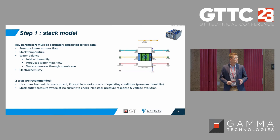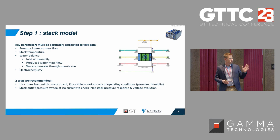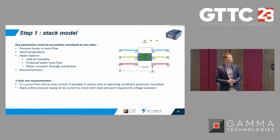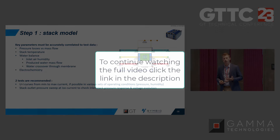For the correlation, the first step in constructing the model is to build a stack model. It is a simplified one with a simplified anode, cathode, and cooling loop. The main parameters that are very important for model correlation are pressure.